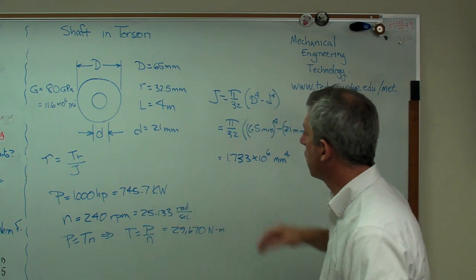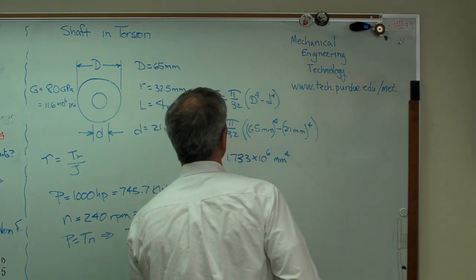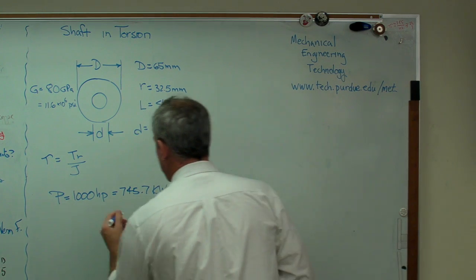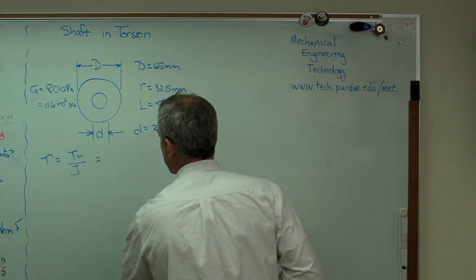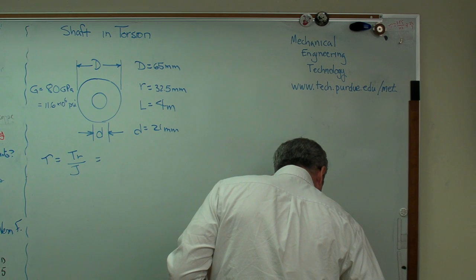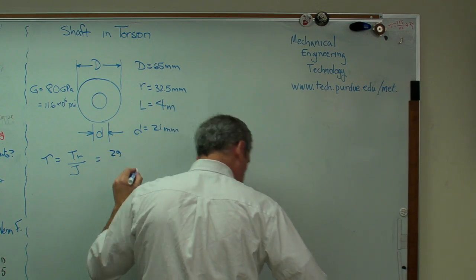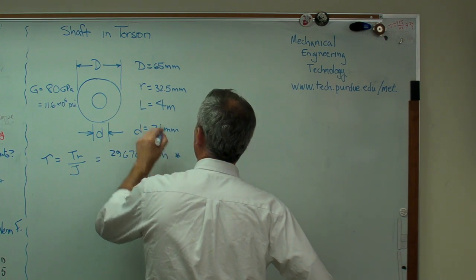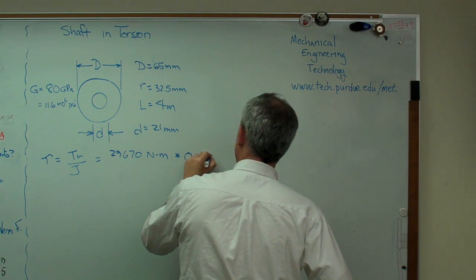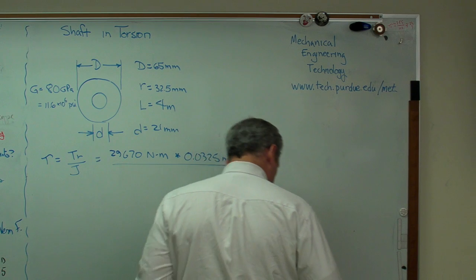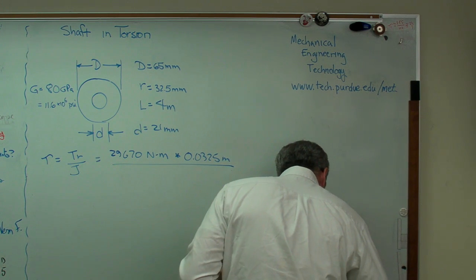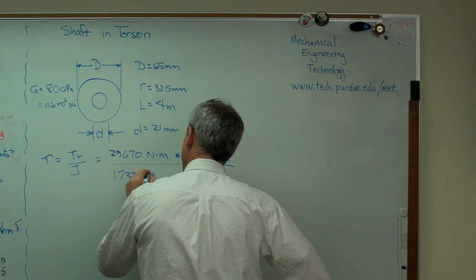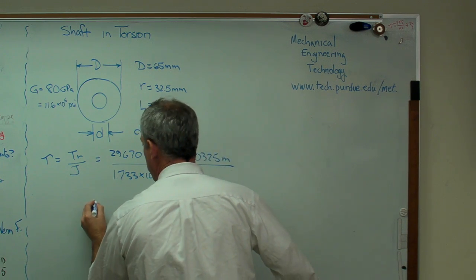So I'm going to erase some of this stuff over here, and we'll evaluate that. So T, R over J. In fact, let me get rid of this, too. So T is 29670 newton meters times R, which is going to be that. That's going to be 0.0325 meters over J, which was this gargantuan number. Let's see. That's going to be 1.733 times 10 to the minus 6 meters to the fourth.